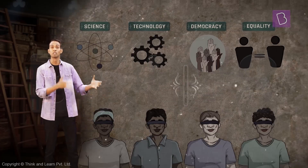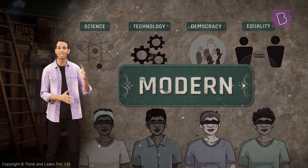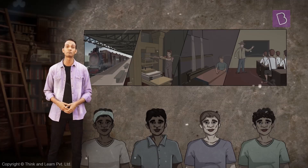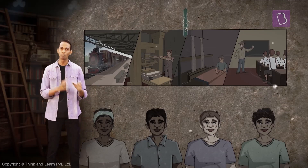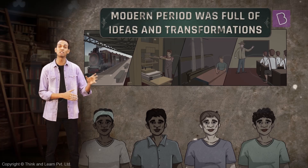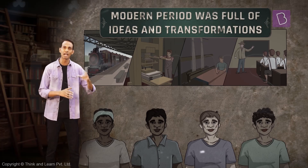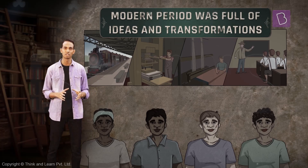The modern period brought about a sea change to the economic and social lives of people. It was seen as a period full of ideas and transformations. But some historians were not happy even with this periodization. According to them, it was borrowed from the West. The medieval period was not so dark and ignorant for the whole world, especially for India.